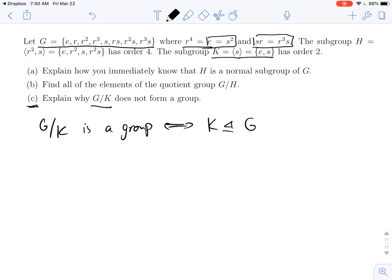So one way that we can check whether or not a subgroup is normal: K is normal in G if and only if each left coset of K is equal to its corresponding right coset for all g in G.